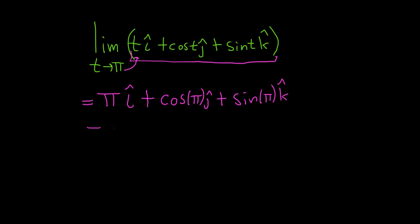So here this is pi i-hat. The cosine of pi is negative 1, so this is minus j-hat. And the sine of pi is 0, so plus 0 k-hat.